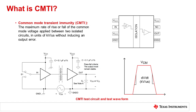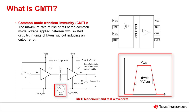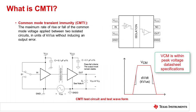A simplified CMTI test setup and the typical common mode pulse waveforms are shown here. The input and output signal logic levels are selected to correspond with the datasheet specifications, and a pulse transient VCM is applied to the ground on the input side. While the outputs are monitored for a change in logic state, the VCM peak voltage does not exceed the allowed maximum peak transient voltage rating of the isolator, and multiple slew rates are tested.